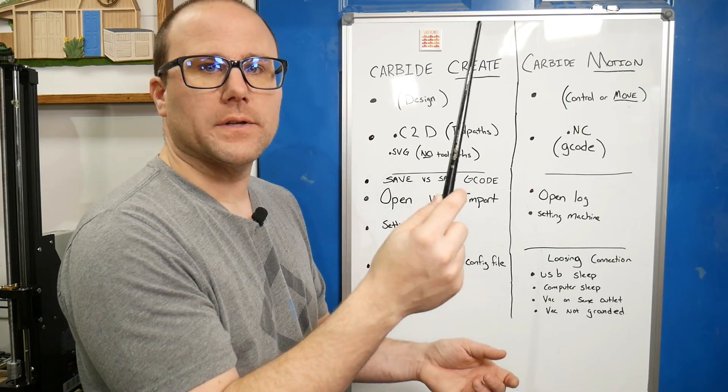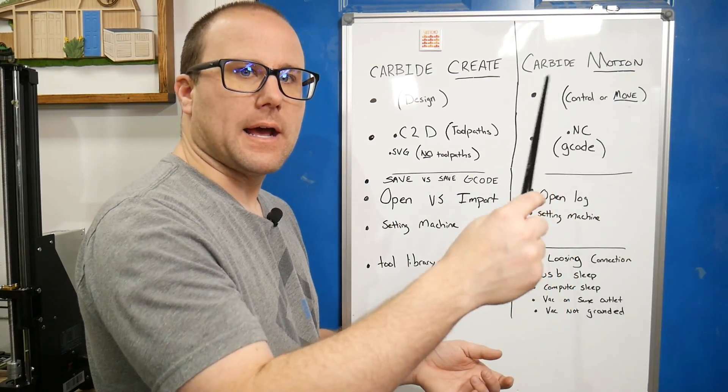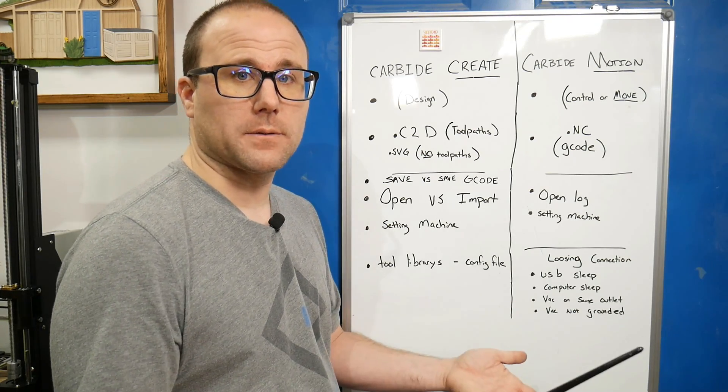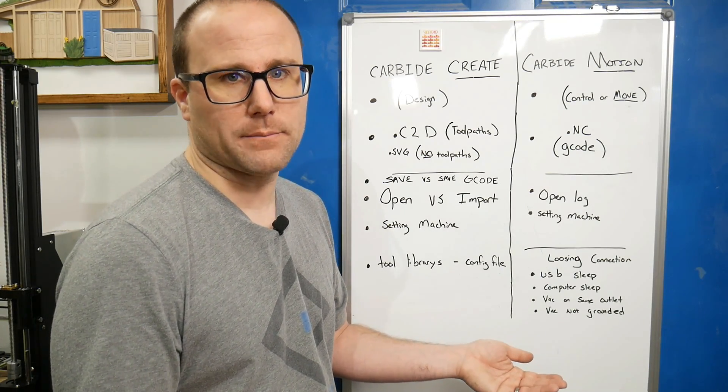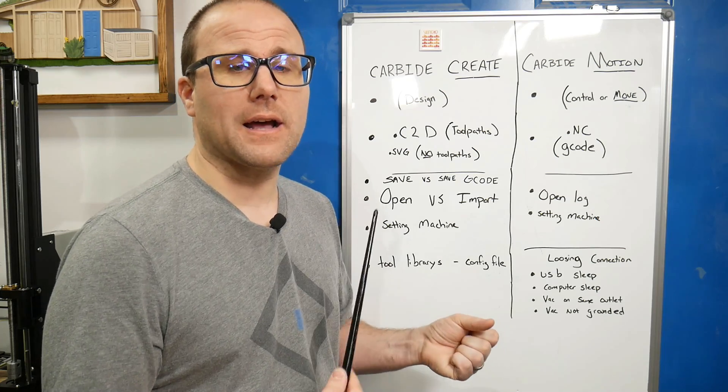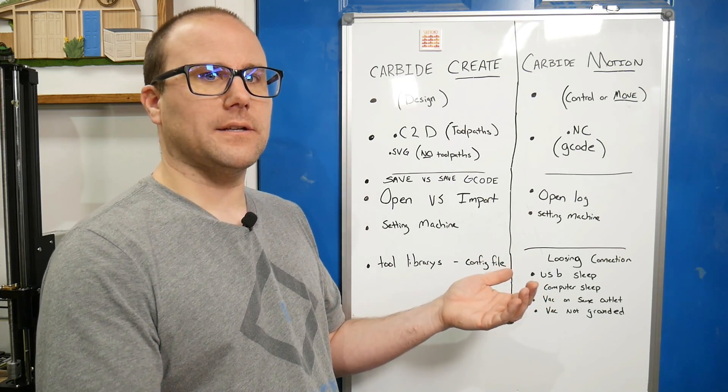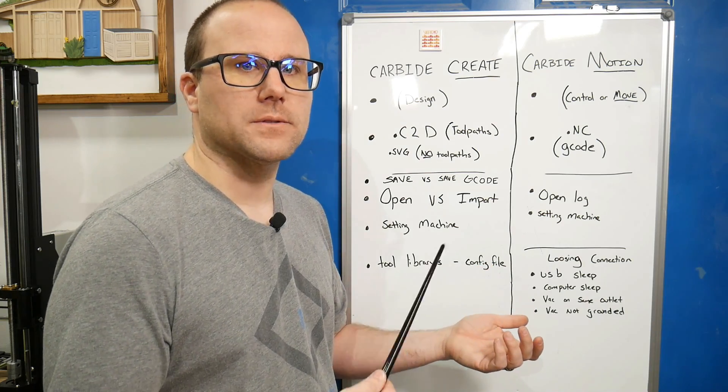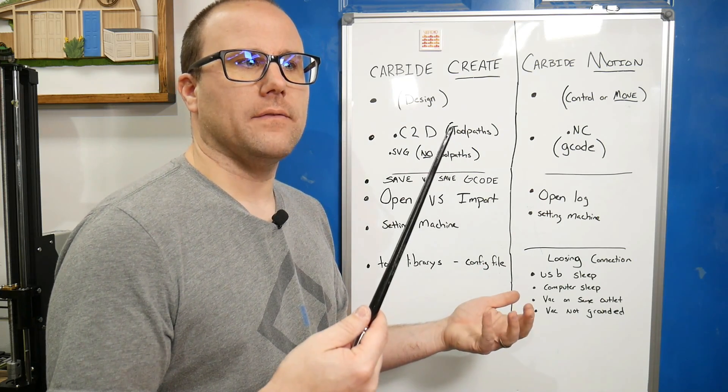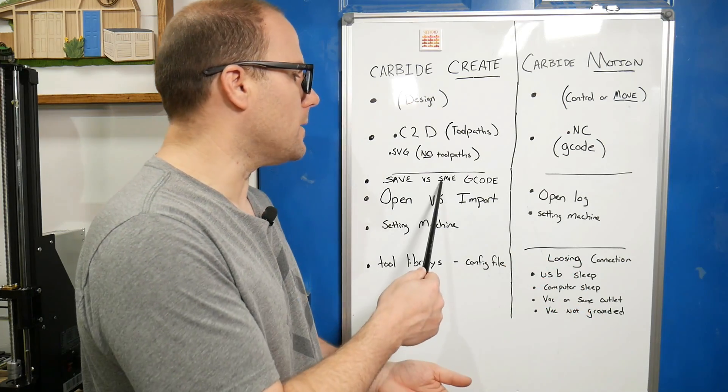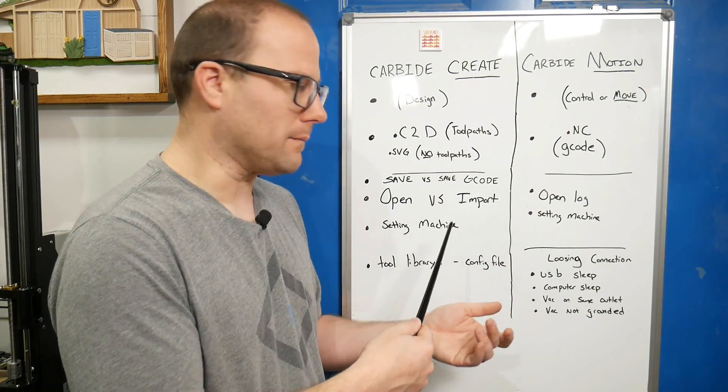We want to save the g-code so we can cut something out in Carbide Motion. On the toolpaths page, after we create toolpaths at the bottom, it will say save g-code. I like to save the g-code because if something goes wrong and the machine turns off, our g-code is lost. So I always save the g-code to my computer.